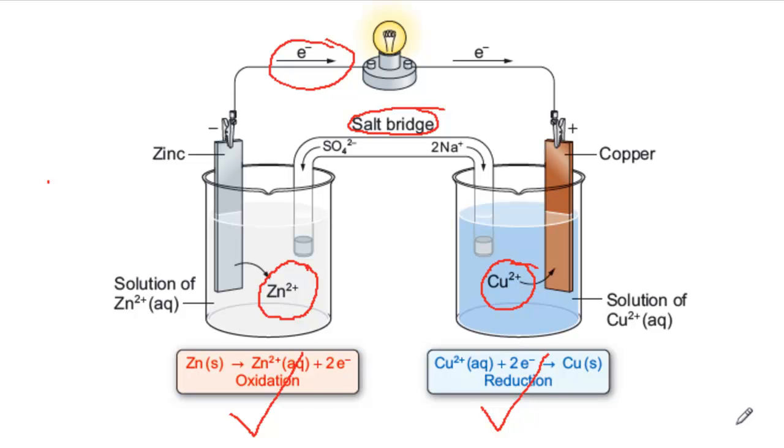What the salt bridge does is to provide a path for negative ions to flow towards the left-hand half cell to counteract the build-up of positive charge, and positive ions to flow towards the right-hand electrode to counteract the build-up of negative charge.